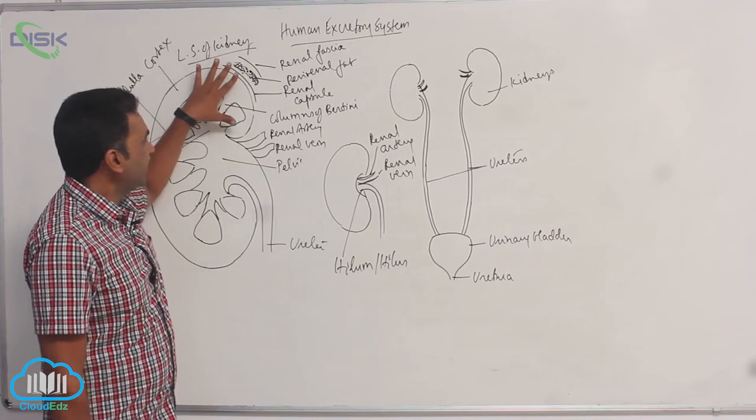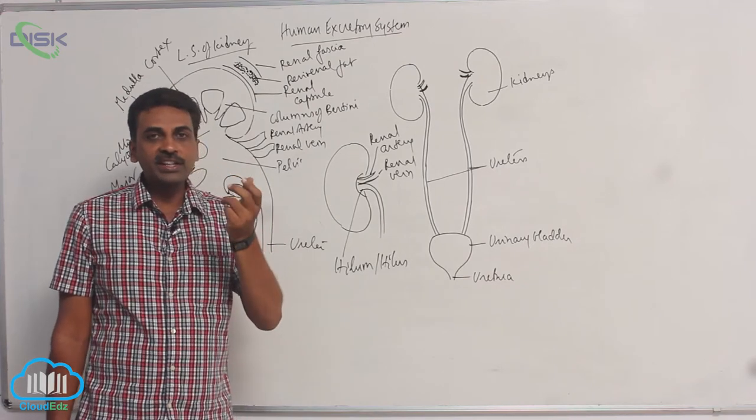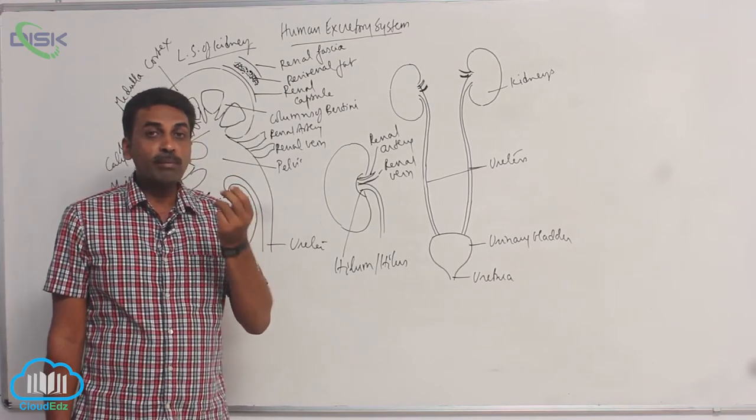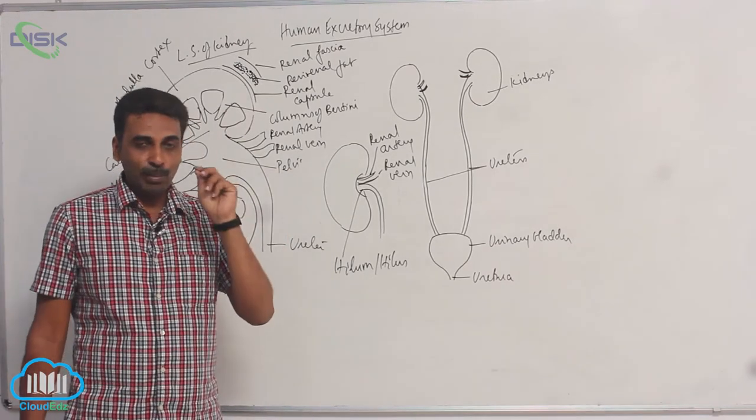And in the kidney, there are around, in each kidney, there are about one million nephrons. Not seen in the diagram, they are minute. They are the structural and functional units of kidney.